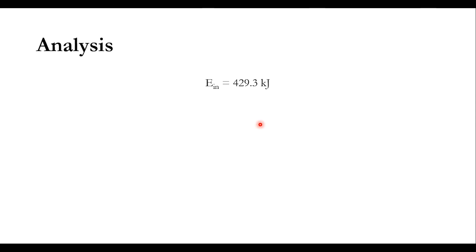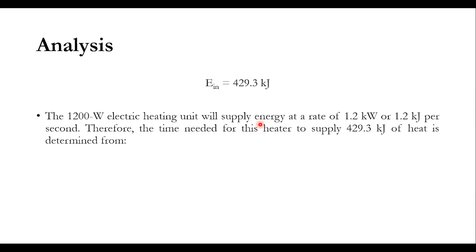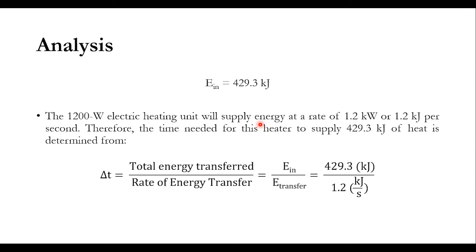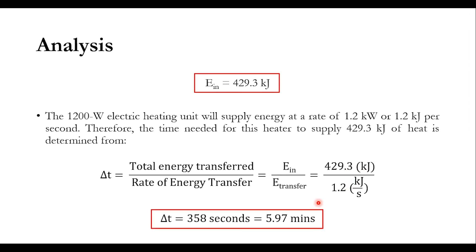This energy can be supplied by the 1200 watt electric heater. Delta t is calculated as total energy transferred divided by the rate of energy transfer. E-in of 429.3 kJ divided by 1.2 kJ per second (since 1200 W equals 1.2 kW equals 1.2 kJ/s), with kJ cancelling, gives delta t equal to 358 seconds, approximately 5.97 minutes needed to raise the water temperature from 15 to 95 degree centigrade.